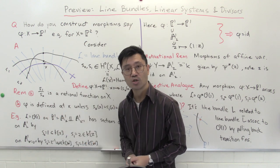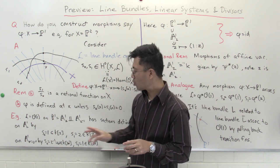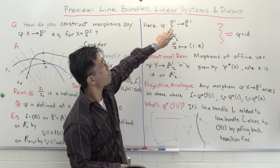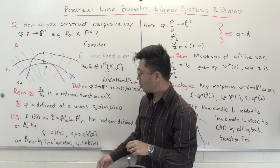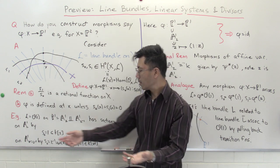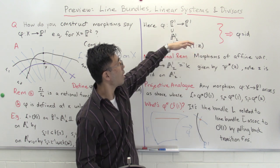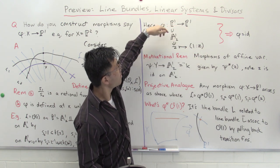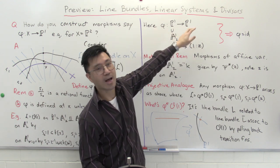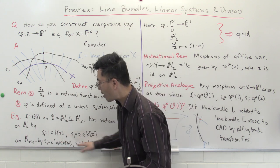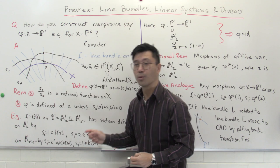We have our line bundle O(1) and two global sections, so what map does this give from P1 to P1? On the patch A¹_z, pick a point z: s₀(z) = 1 and s₁(z) = z, giving the point [1 : z] in P1 — that's the usual affine coordinate, the identity map on A¹_z. You can check that on the other patch it's also the identity, so φ is just the identity map. That's how you recover it using these two global sections.